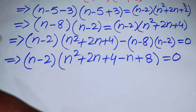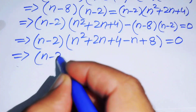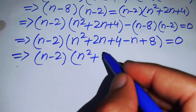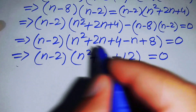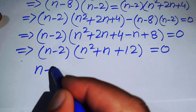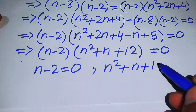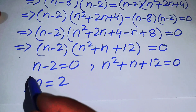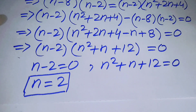Simplifying inside the bracket: 2n - n = n and 4 + 8 = 12, giving (n - 2)(n² + n + 12) = 0. This gives two cases. The first case: n - 2 = 0, so n = 2. This is our first solution.